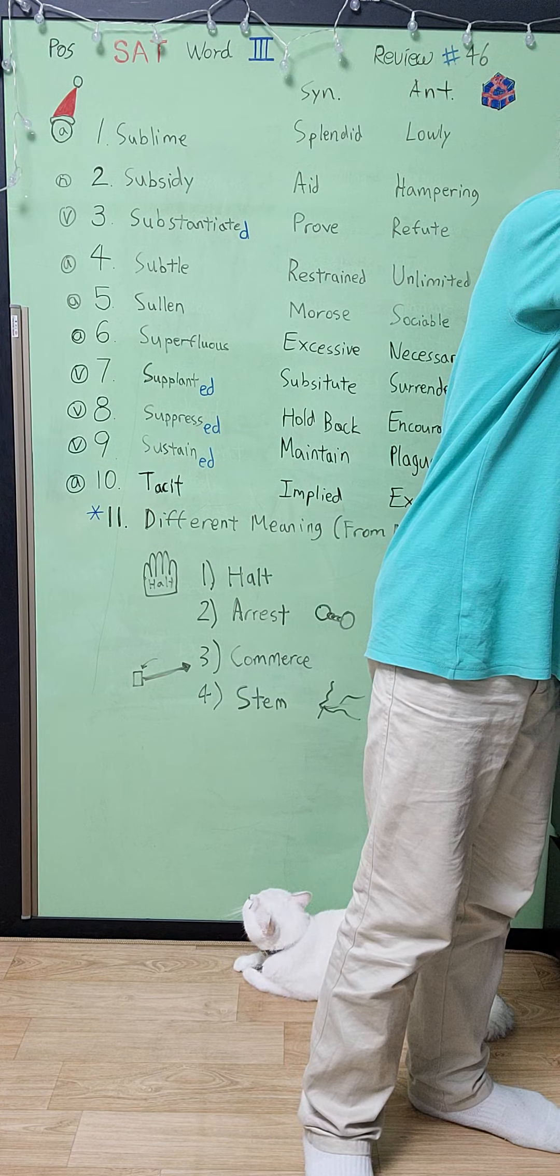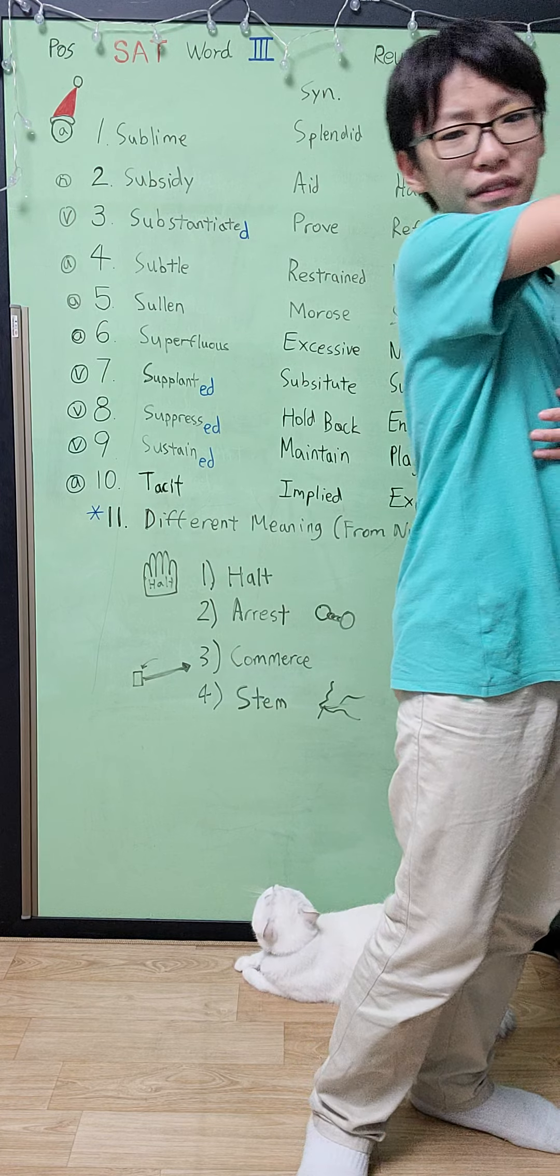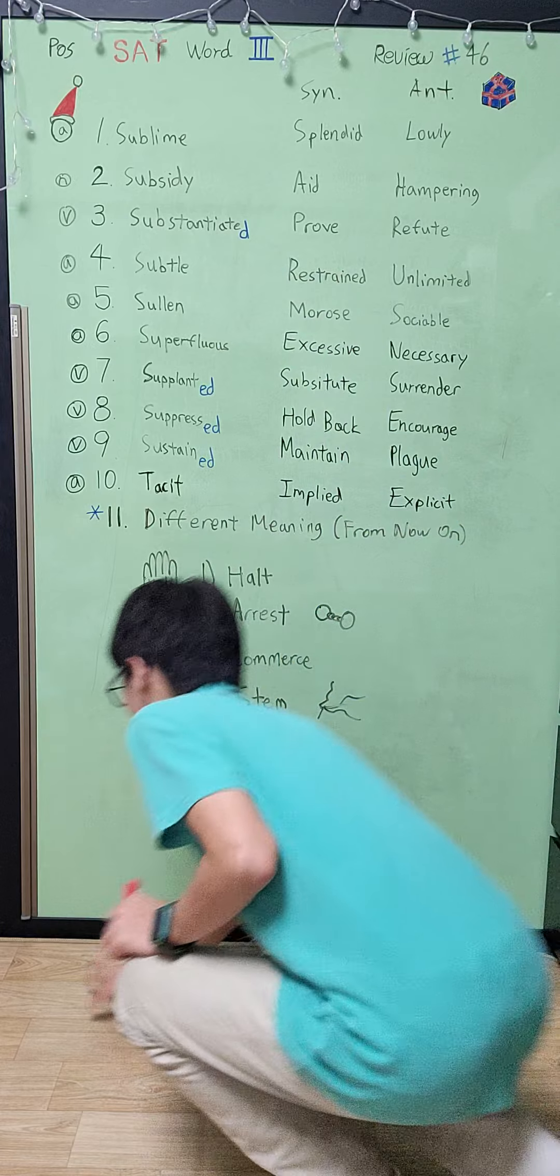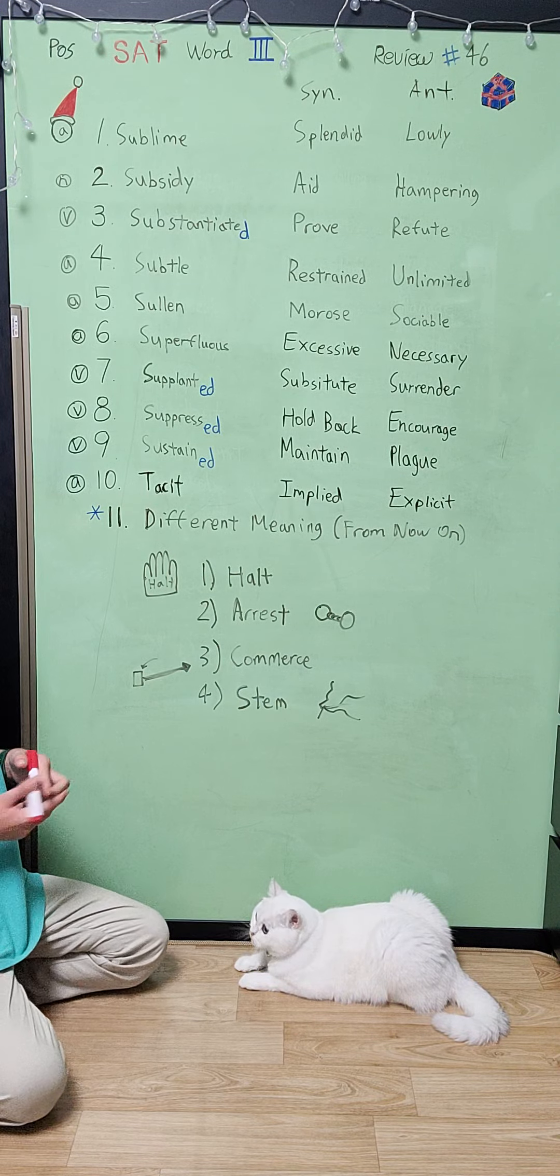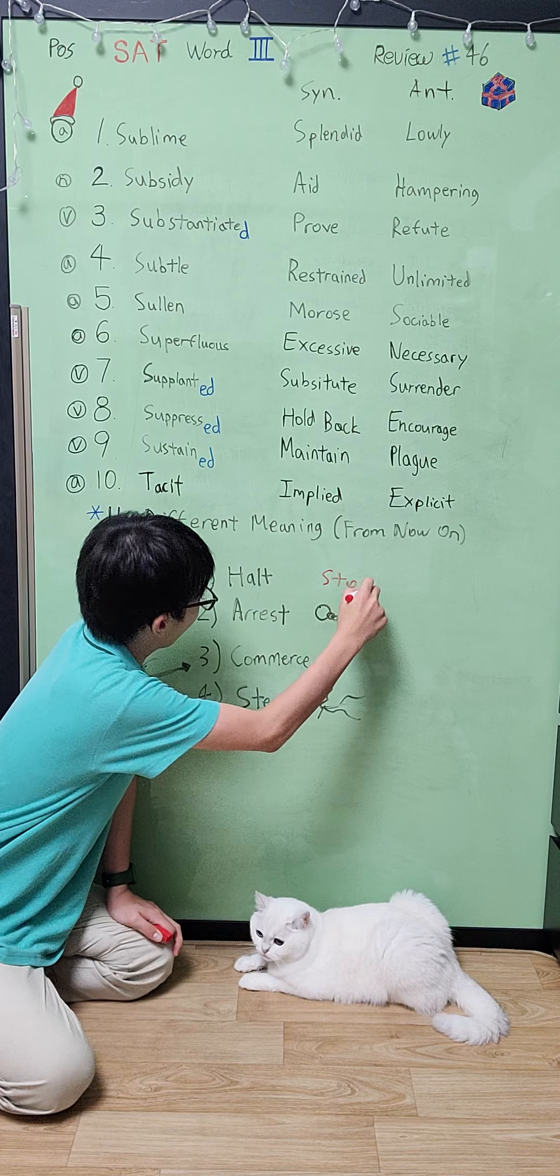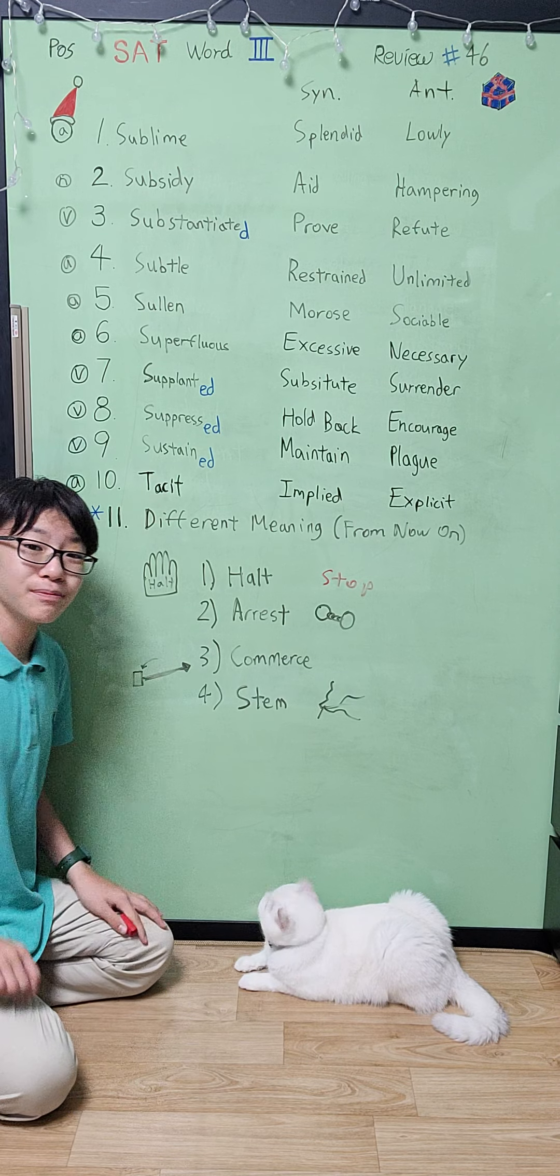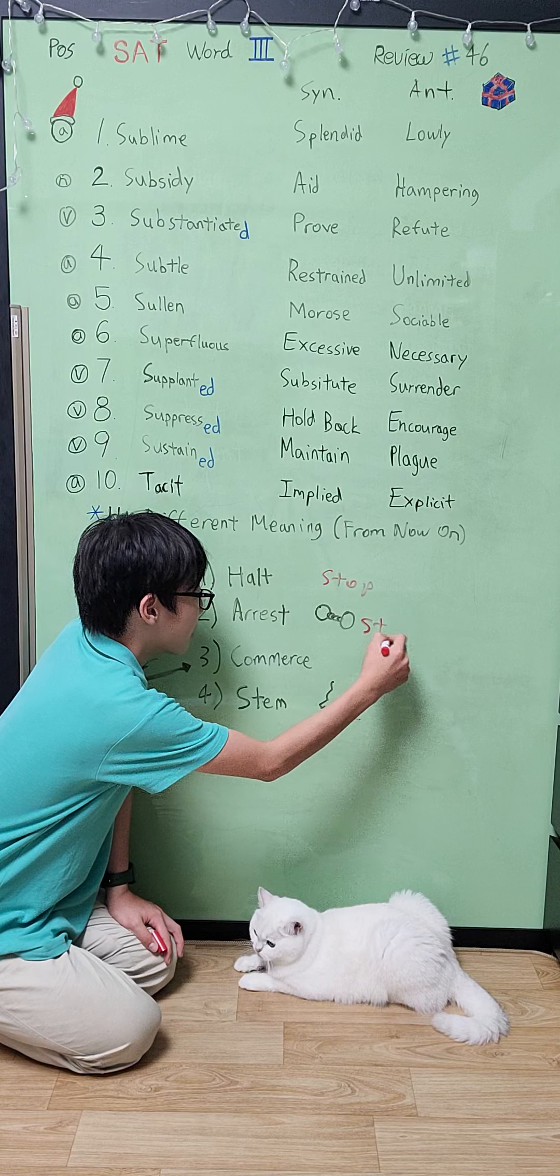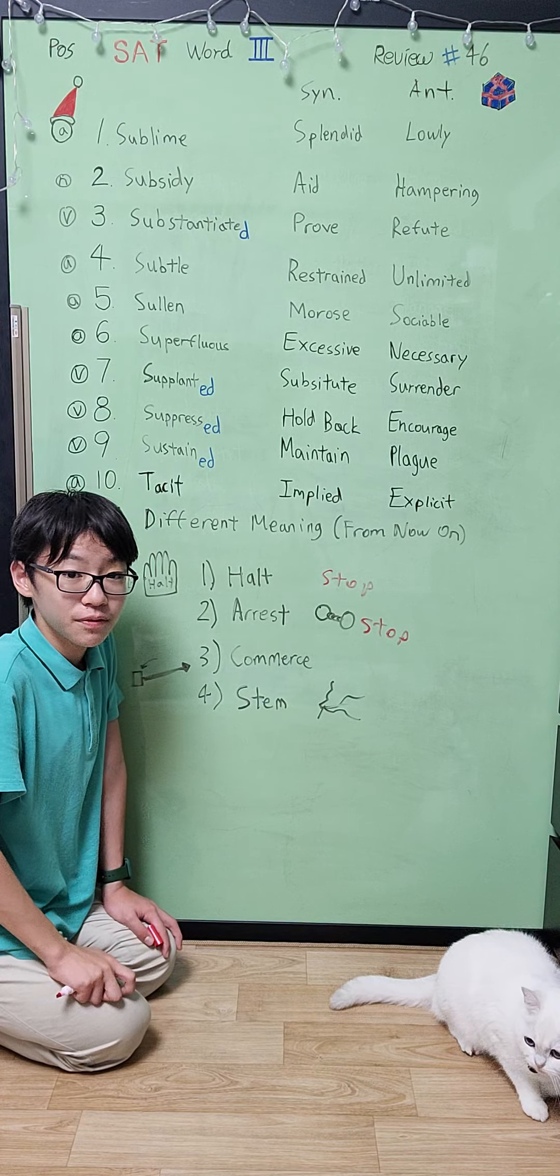So in this case we have these four words: halt, arrest, commerce, stem. So would you want me to use red or blue? We haven't used red in a while, so let's use red. First of all, we have to find out the meanings of these things. Halt - its synonym would basically be stop. The second word, arrest, it basically means also to stop.